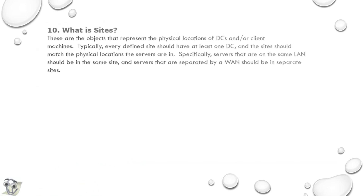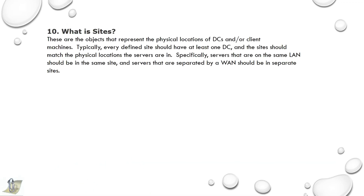Tenth question: What are sites? Sites are objects that represent the physical locations of DCs and/or client machines. Typically, every defined site should have at least one DC, and sites should match the physical locations the servers are in. Always prefer servers in the same LAN to be in the same site, and those separated by a WAN should be in separate sites.